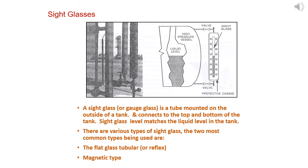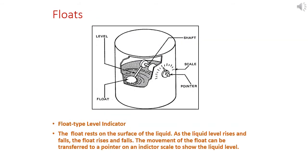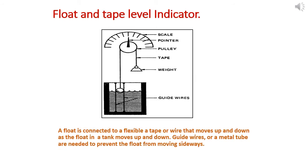Another type is float type level indicator. The float rests on the surface of the liquid. As the liquid level rises and falls, the float raises and falls. The movement of the float can be transferred to a pointer on an indicator scale to show the liquid level outside. Float is connected to a flexible tape or wire that moves up and down as the float in the tank moves. A guide wire or metal tube is needed to prevent the float from moving sideways.